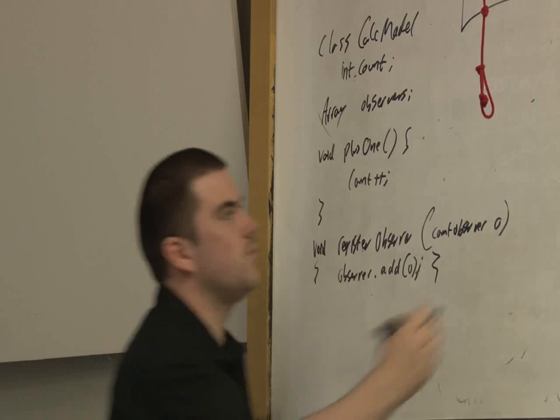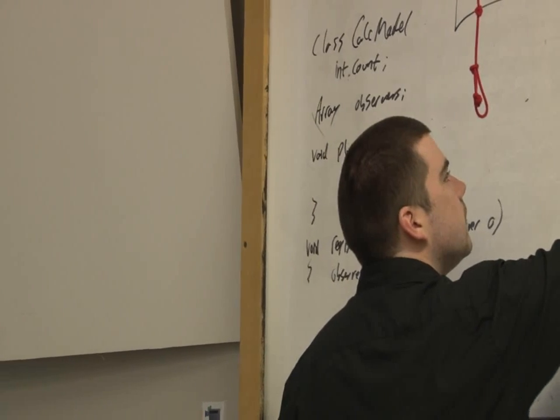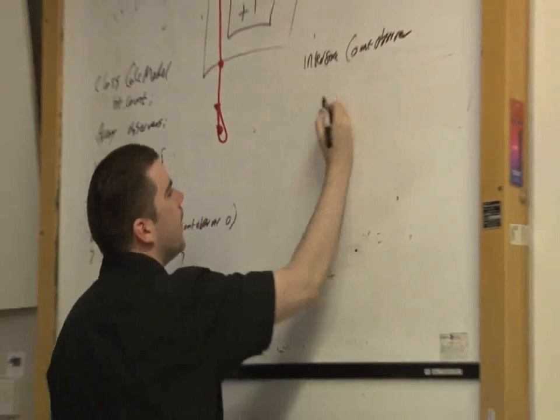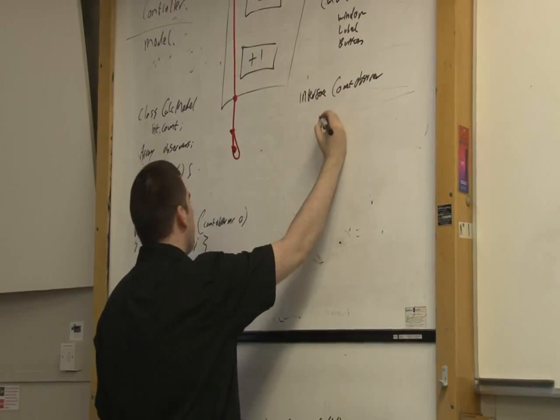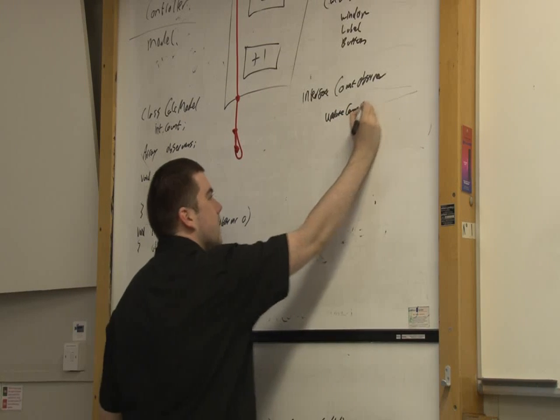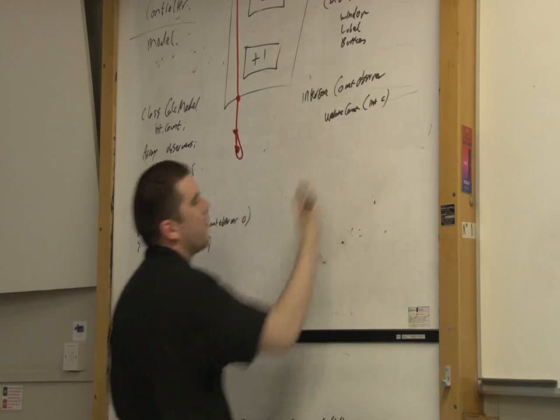What an interface basically is, we can just say interface, and it will give this interface one method called update count, which will take in an integer count, or whatever.